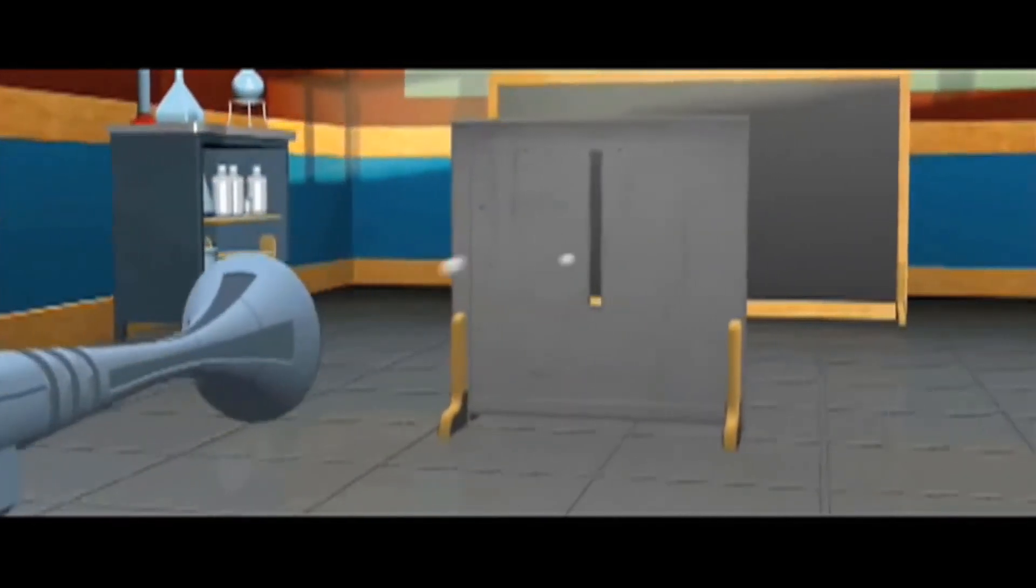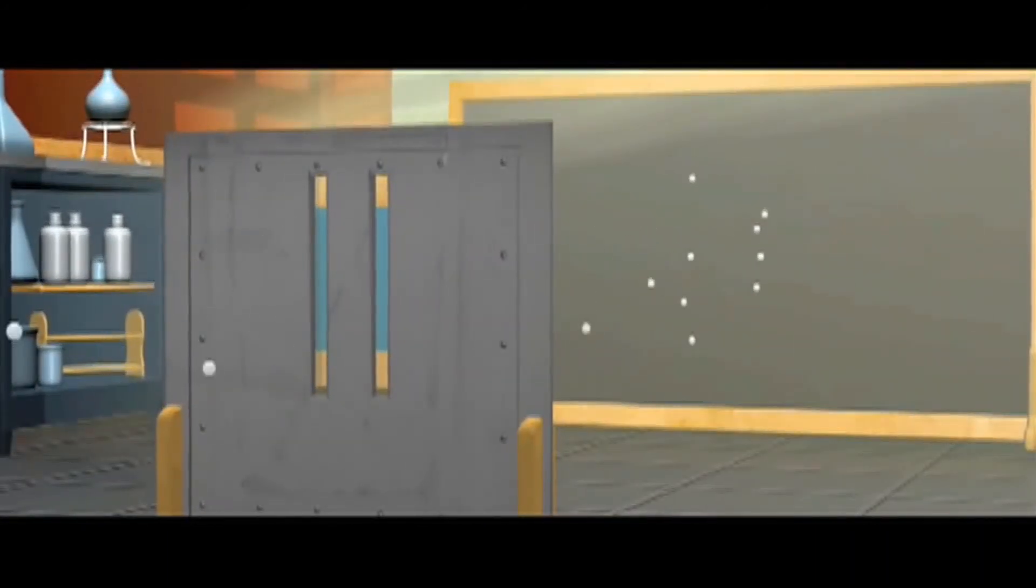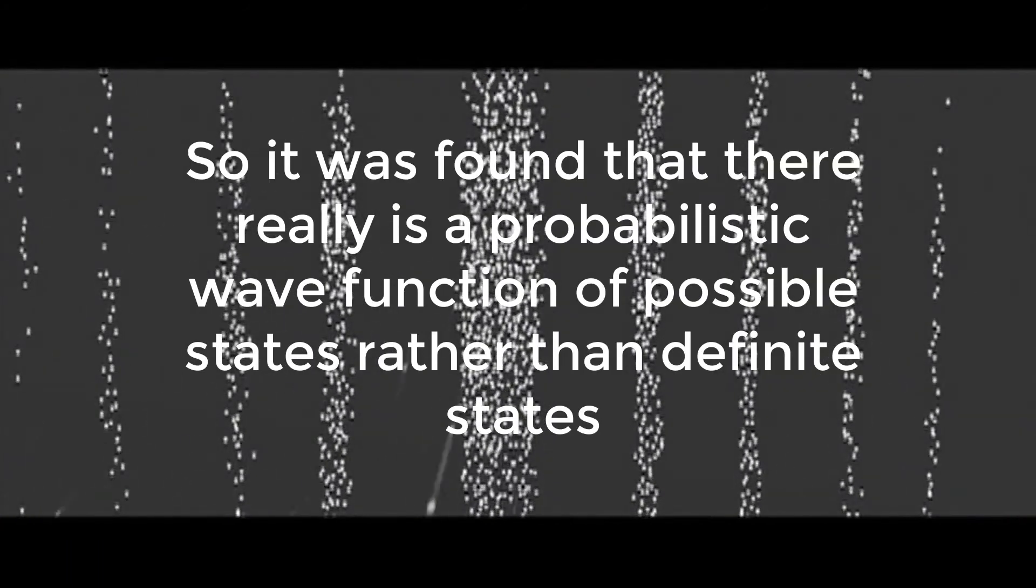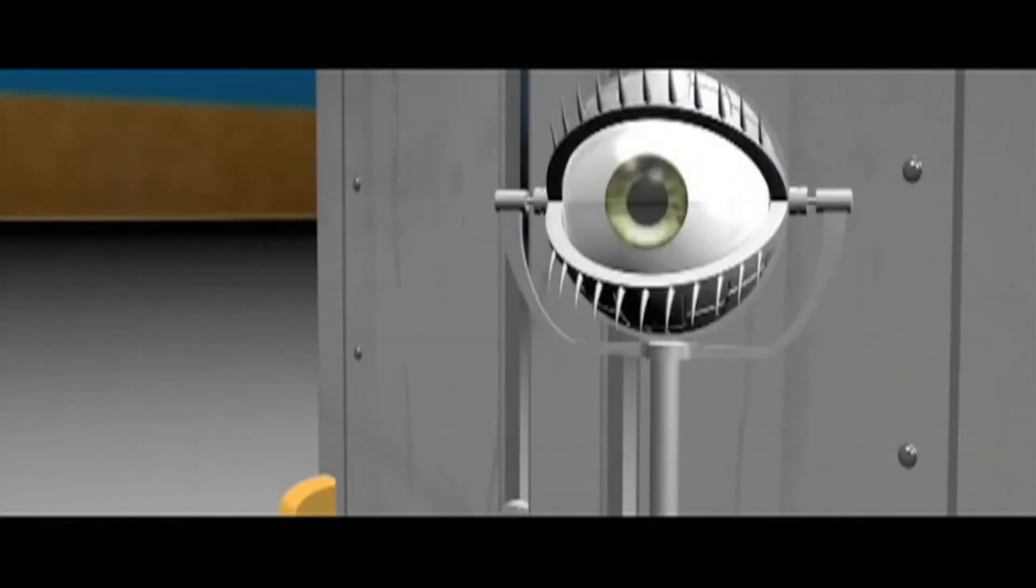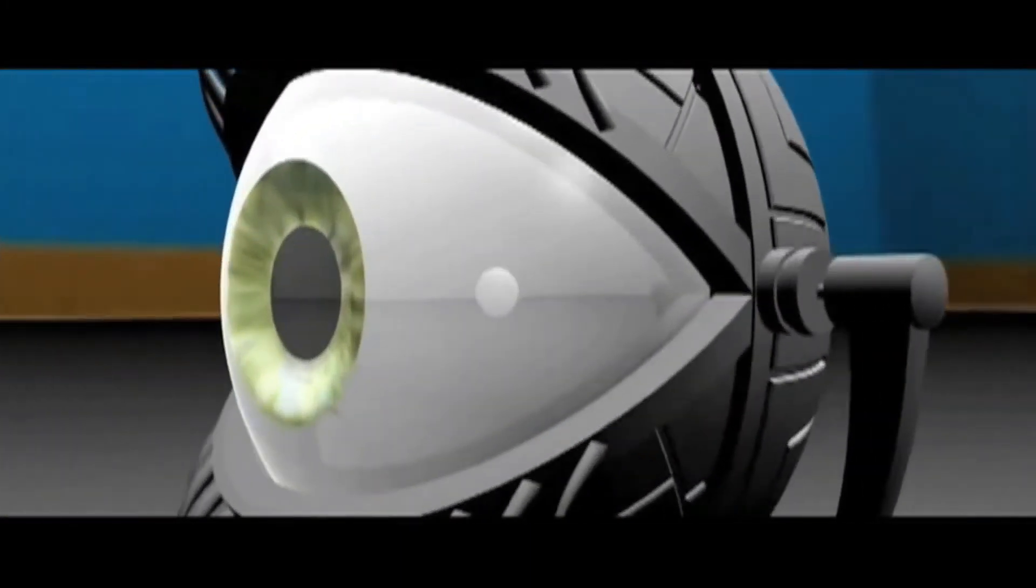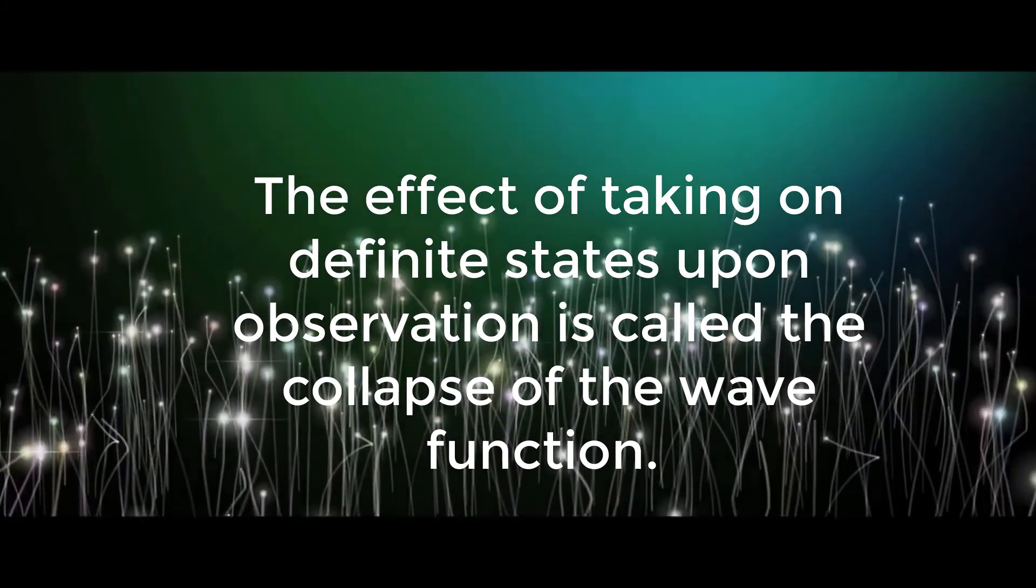So, later experiments tried to modify the conditions, where a single particle was being sent through the slit one at a time. They did this so that with only one particle going through, there was literally nothing else for it to be interfering with. However, the individual particles once again collectively formed an interference pattern on the back screen. So, they had to be interfering with something, and yet there was nothing else other than themselves to be interfering with. So, it was found that there really is a probabilistic wave function of possible states, rather than definite states. Now, if one were to measure or observe which of the two slits the electron actually goes through, then they suddenly found that the electron produced clump patterns once again, rather than wave patterns. Merely observing the electron causes it to take on a definite state, as a particle with defined properties. The effect of taking on definite states upon observation is called the collapse of the wave function.